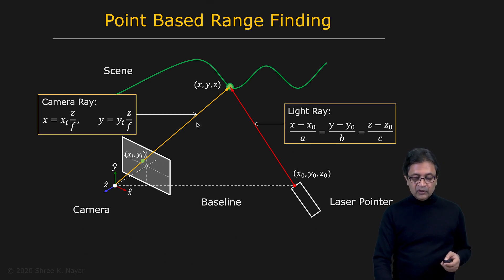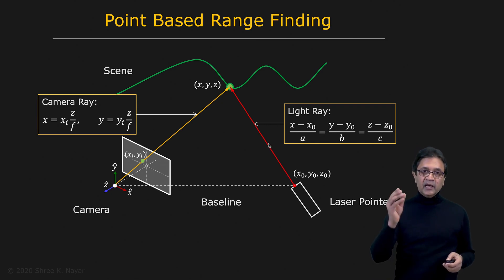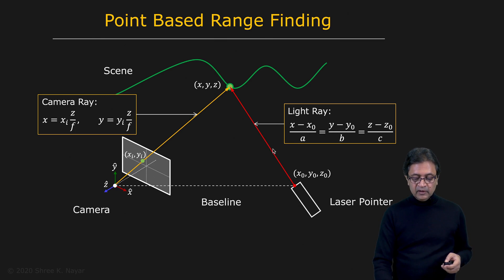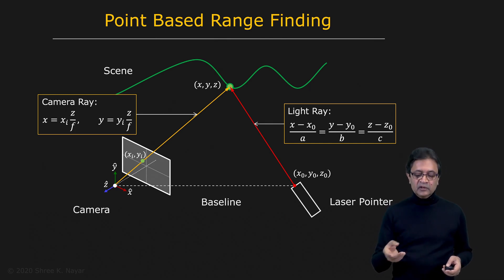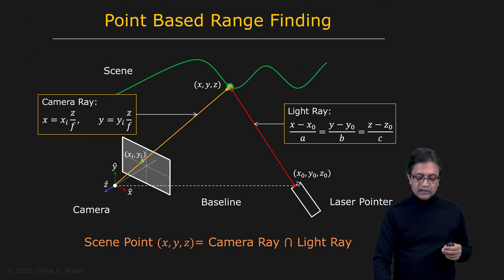Indeed you can, because the point XI, YI gives you the equation, thanks to perspective projection, of the line of sight corresponding to that point. That's the orange ray given by these two equations right here. We also know in this coordinate frame the equation of the straight line corresponding to the light ray being emitted by the laser pointer — that's the red ray. So the scene point XYZ lies at the intersection of the scene ray from the camera and the light ray from the laser pointer. That's very easy to compute.